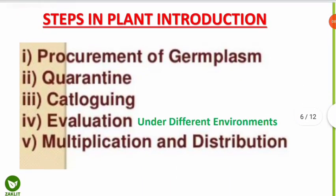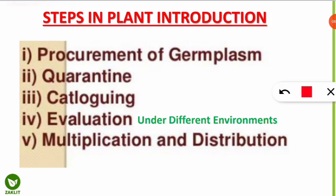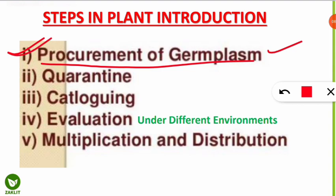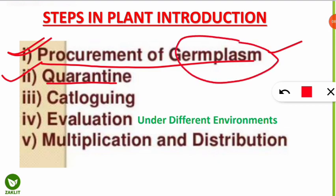Now what are the steps in the plant introduction procedure? Step one is procurement of germplasm — we collect the genes or germplasm of the plant variety we want to introduce from other parts of the world or country. Step two is quarantine — similar to COVID quarantine, the new germplasm or crop taken from a different country is kept in quarantine for some days to check whether it is good for our environment and safe for local varieties.